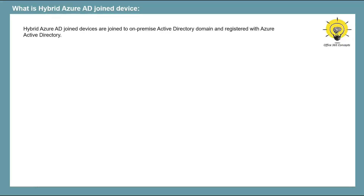If you go by definition, a hybrid Azure AD joined device is a device that is joined with an on-premise Active Directory domain and is also registered with Azure Active Directory.